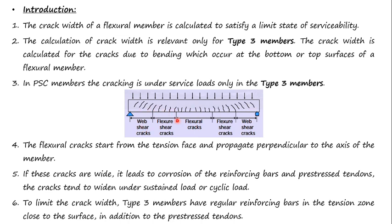All members have cracks propagating perpendicular to the axis of the member. Flexural cracks start from the tension face and propagate perpendicular to the axis. If these cracks are wide, it leads to corrosion of the reinforcing bars and pre-stressed tendons. To limit the crack width, type 3 members have regular reinforcing bars in the tension zone close to the surface, in addition to the pre-stressed tendons.